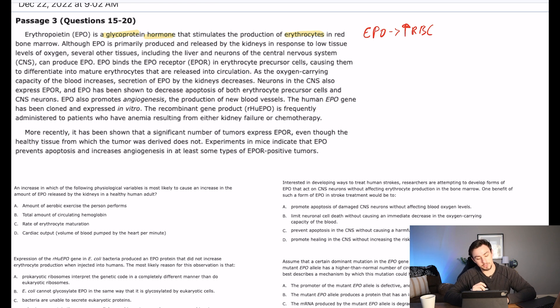Although EPO is primarily produced and released by the kidneys in response to low tissue levels of oxygen. So there's another relationship there: low oxygen, so PaO2, which is partial pressure of arterial oxygen, leads to high EPO. Several other tissues like the liver, neurons of the CNS—neurons is a basic science—can also produce EPO.